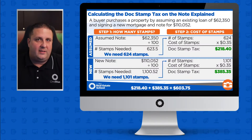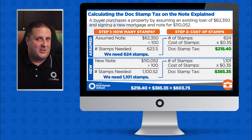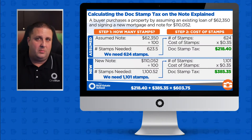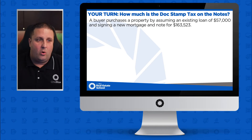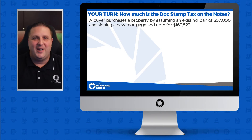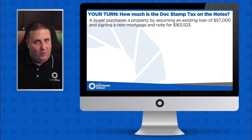When it comes to the state exam, make sure you read the question carefully — and then read it again. Sometimes they ask only for the new note, sometimes only the assumed, and sometimes both. Now it's your turn to practice. A buyer purchases a property by assuming an existing loan of $57,000 and signing a new mortgage and note for $163,523. Hit pause, solve for the assumed, solve for the new, and find the total. Then hit play to go over it.